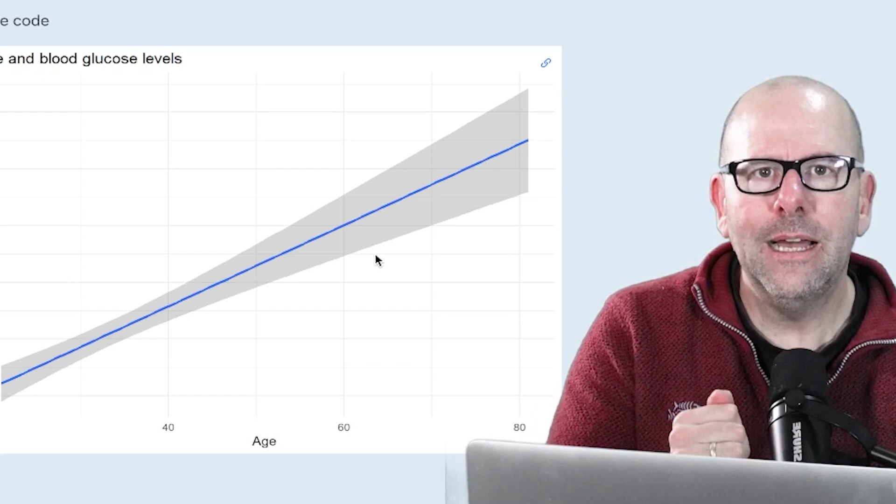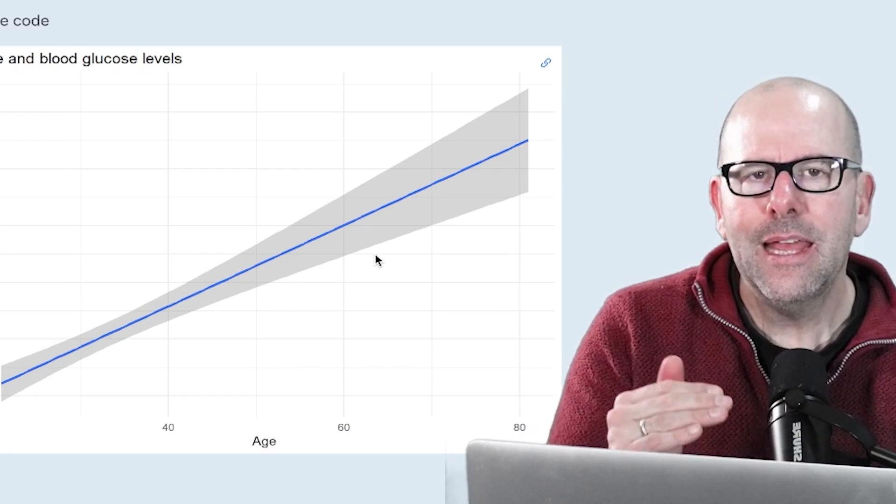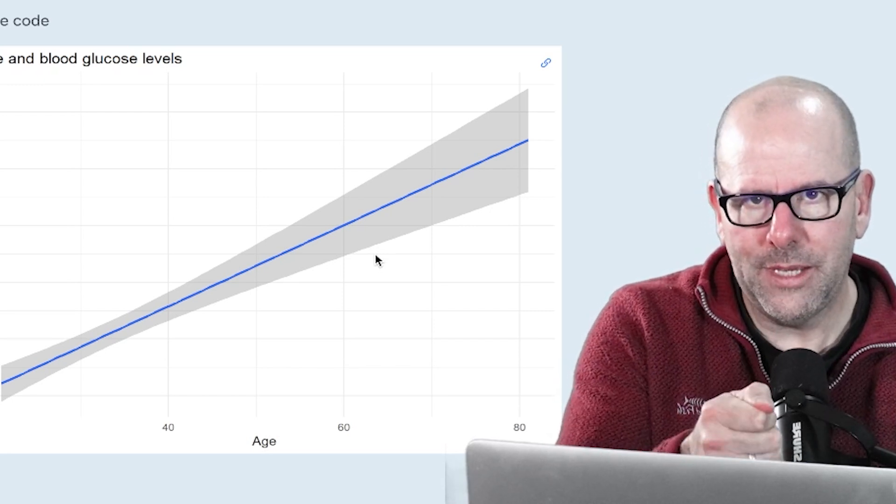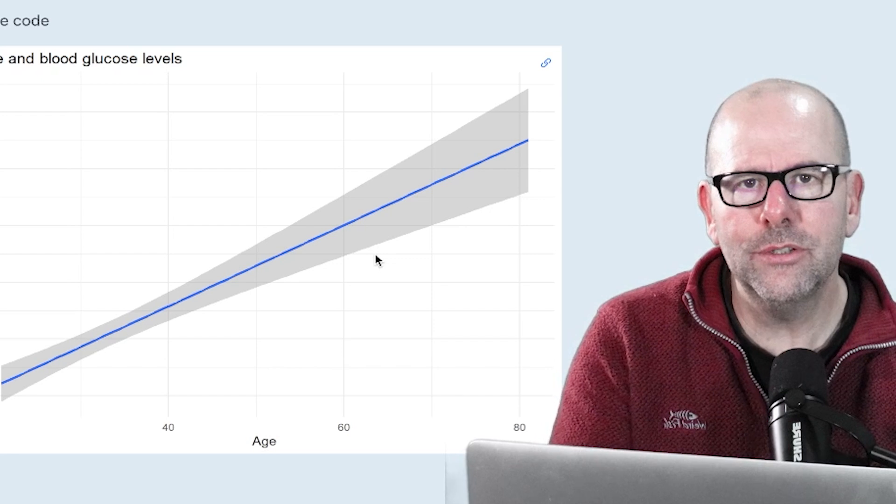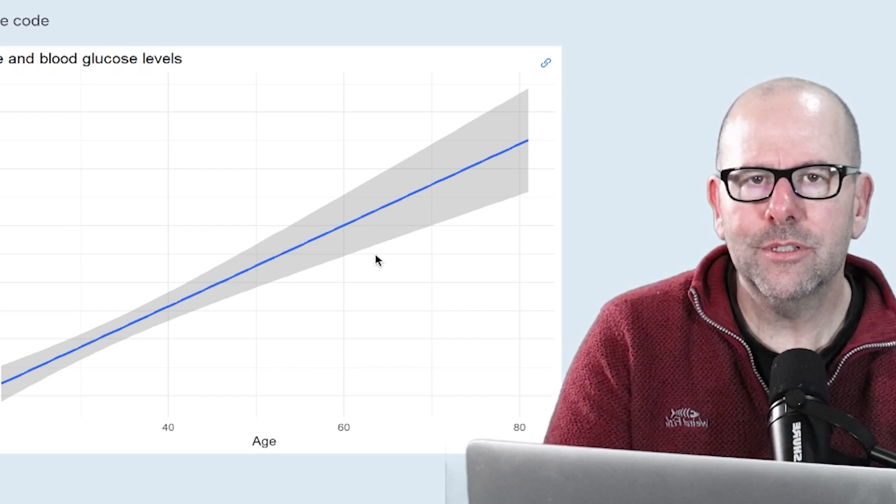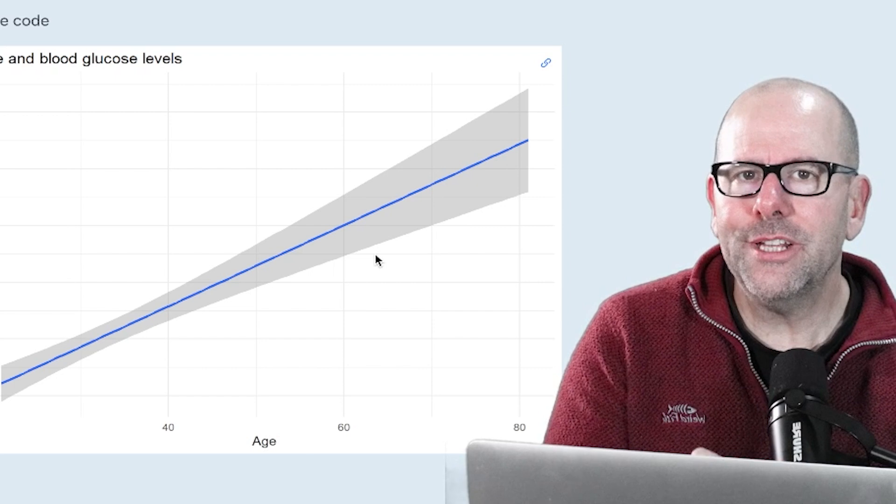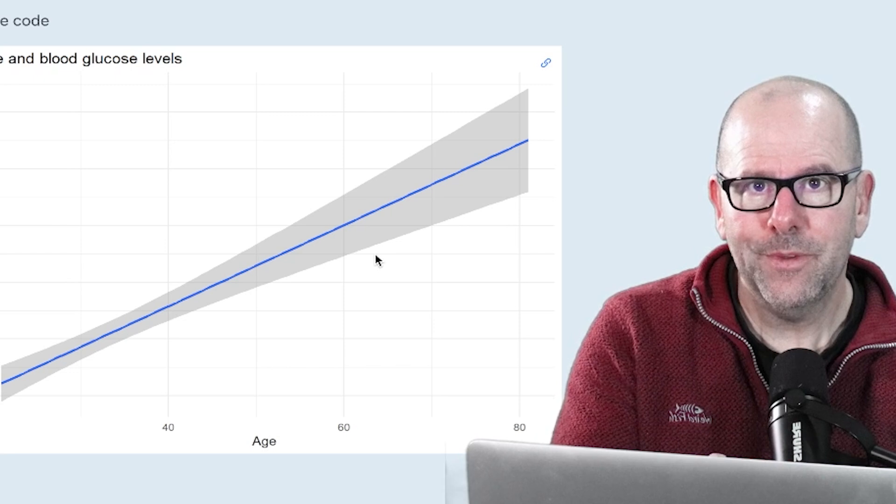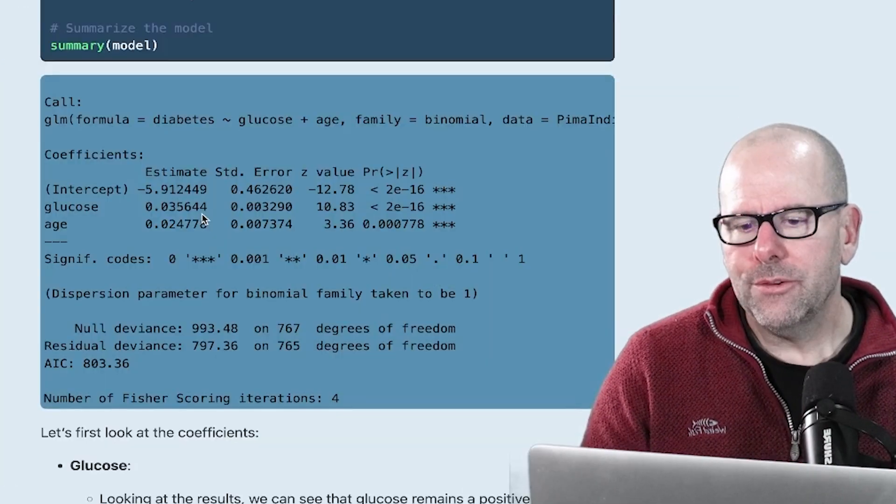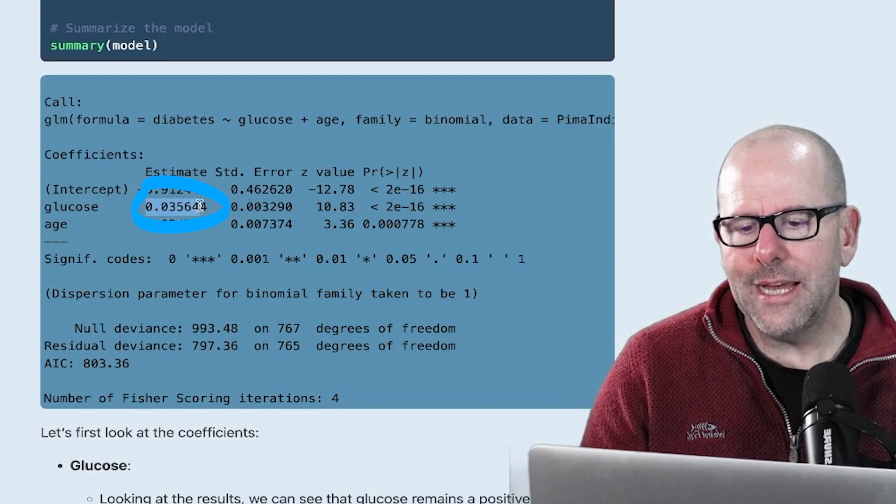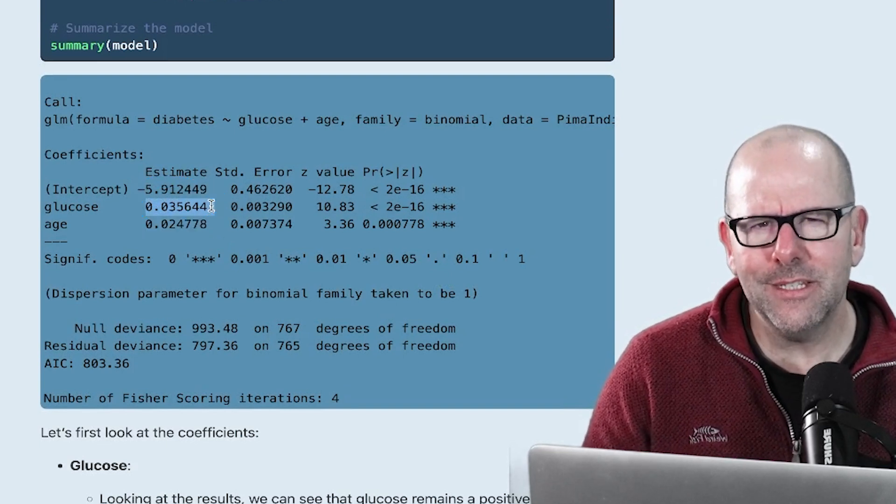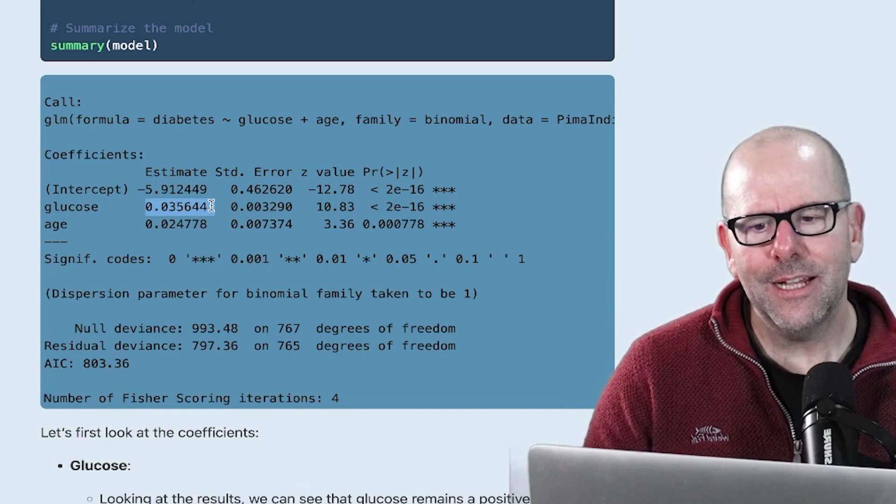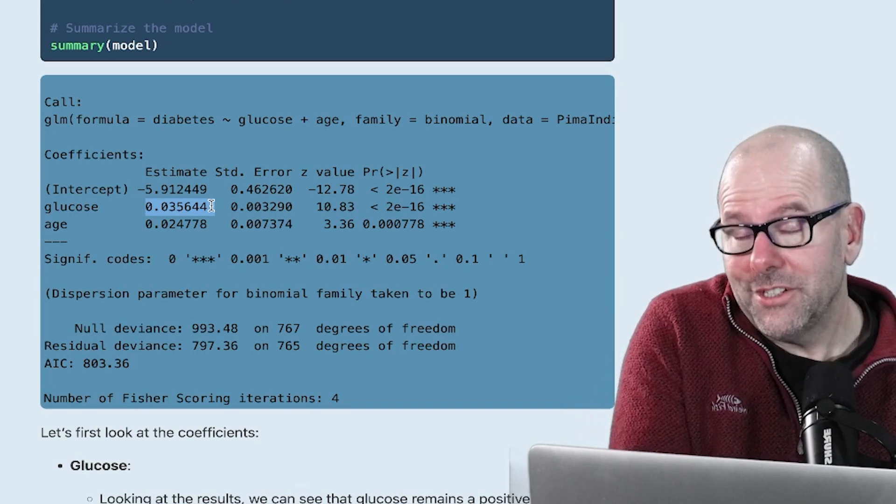And so there's a third variable. And that third variable is temperature. Temperature is associated both with the exposure of interest, in this case, eating ice cream, and temperature's associated with shark attacks. Hotter weather, people swim more, get attacked by sharks. And so that's what we call a confounding variable. It's an alternative explanation. It's associated with both the exposure and the outcome. And that's the case with glucose and age. Glucose is associated with being older. Being older is associated with a higher level of glucose. Being older is also associated with a higher risk of diabetes. In this case, being older does not explain away all of the association of glucose and diabetes. Just some of it.